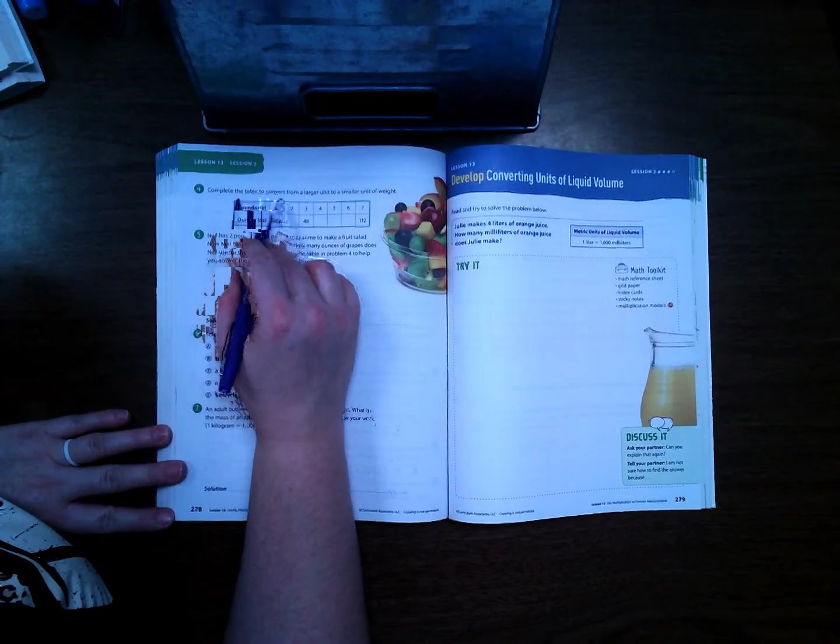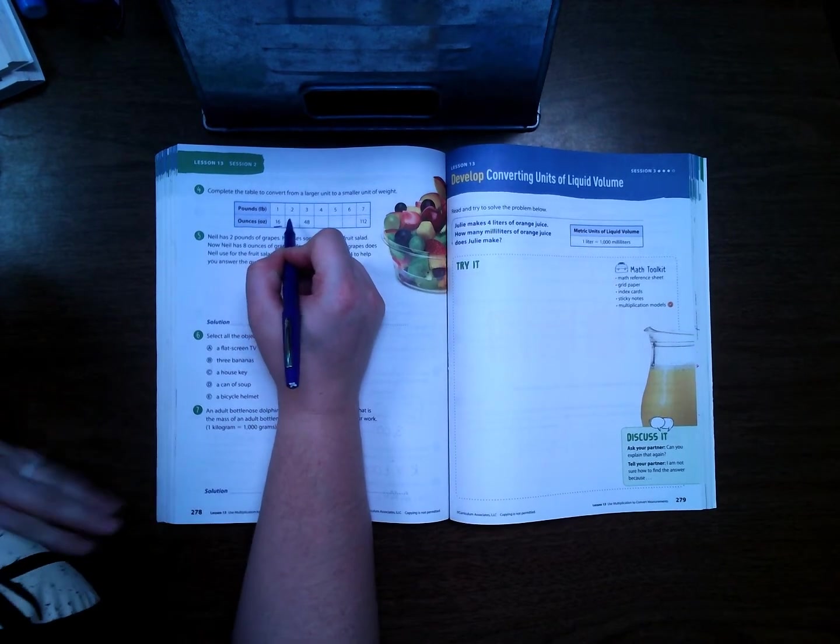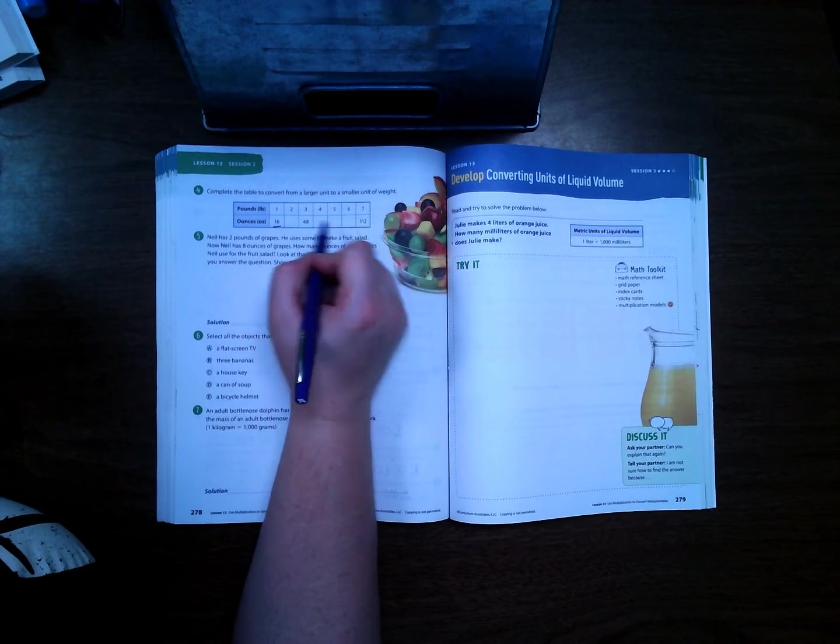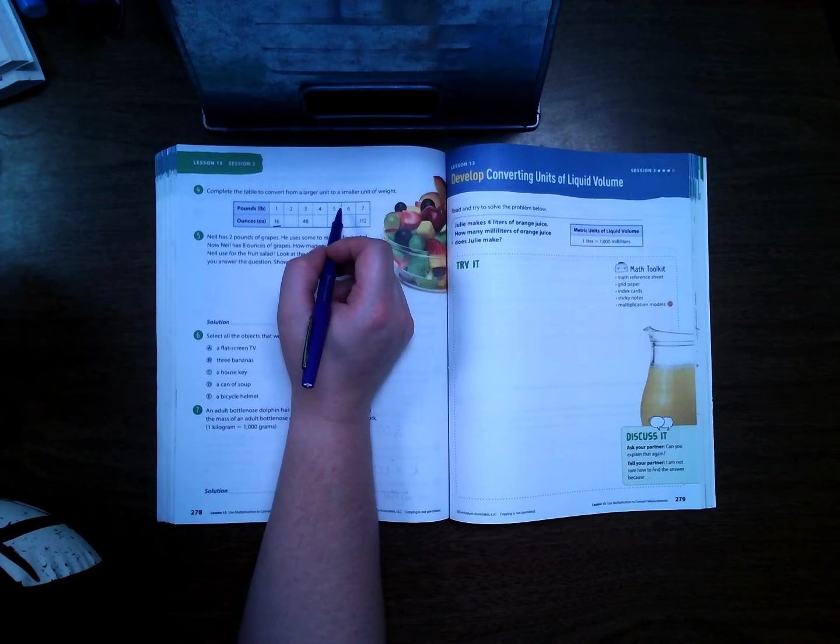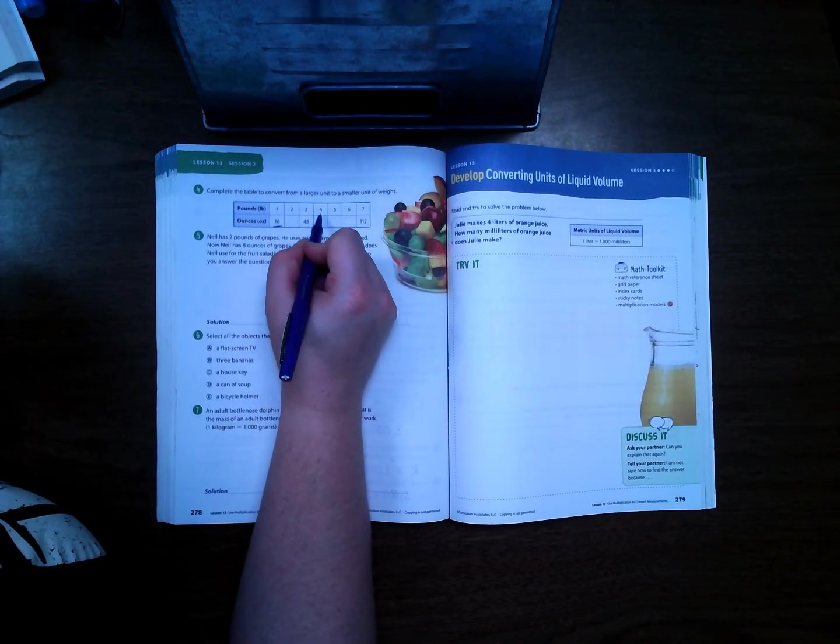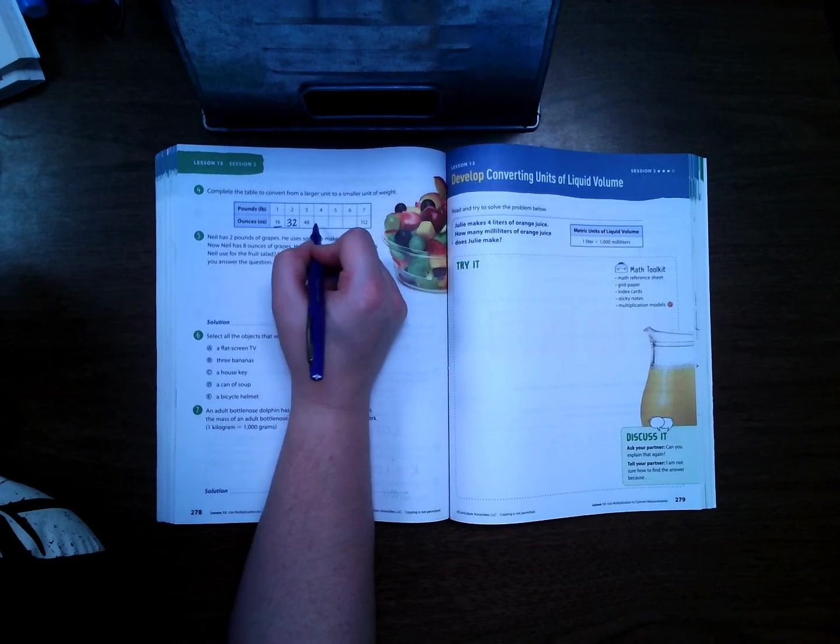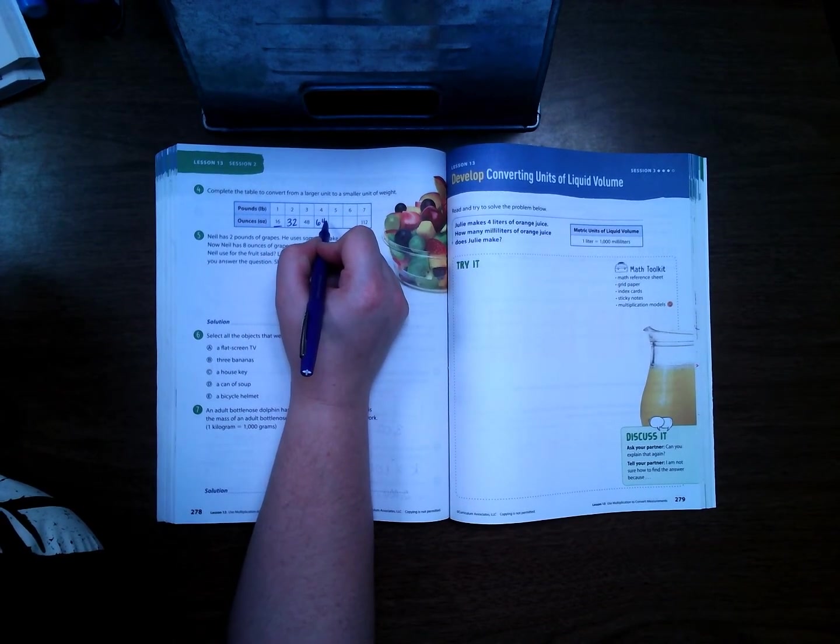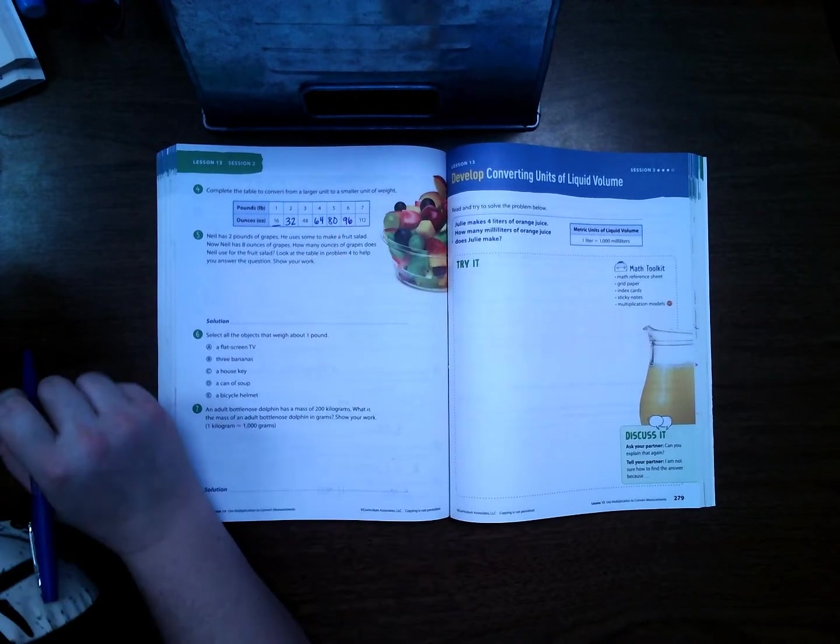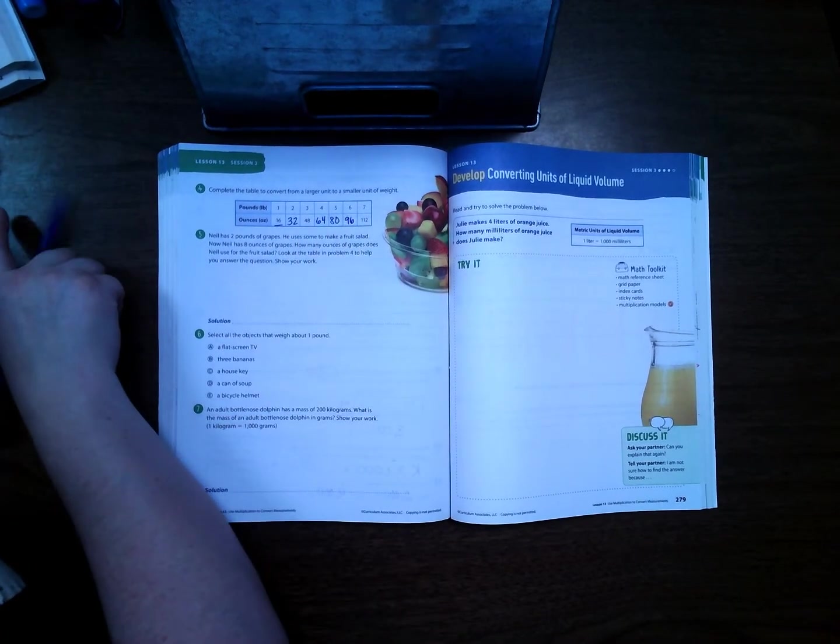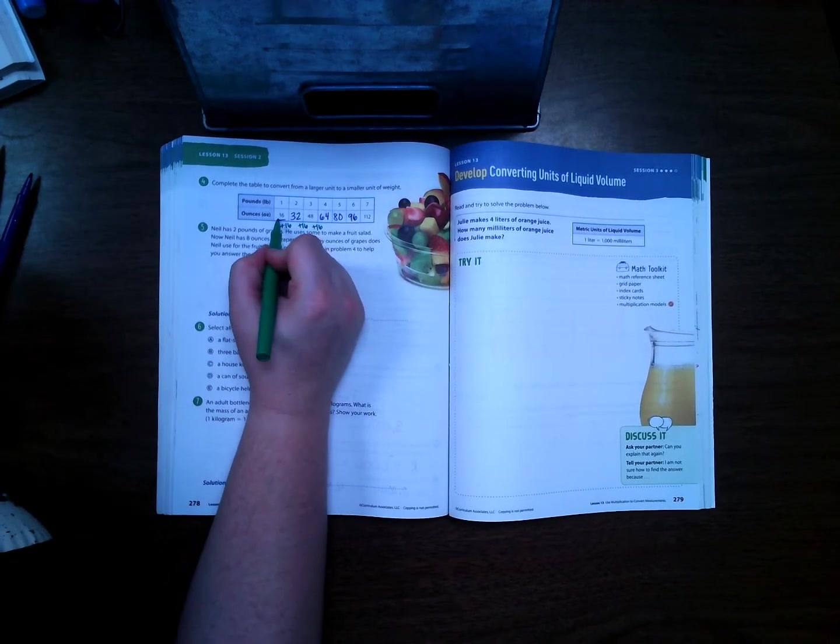On 278 it says complete the table to convert from a larger unit to a smaller unit. Since this starts with 16, we know that we're going to add 16 every single time as we go up through here. Now when you're doing the math test they get a little tricky and sometimes they will skip numbers throughout here to try to throw you off, so you've got to pay attention to what the number is. 2 is 32, 3 is 48, 4 is 64, plus 16 would be 80, plus 16 would be 96. So each time we added 16.